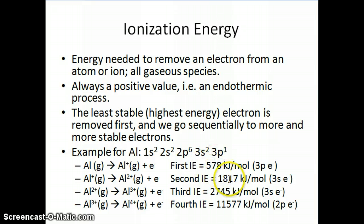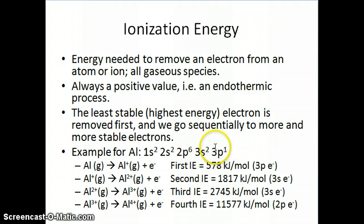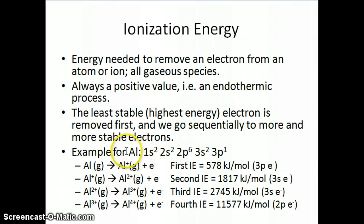We discussed that the different energies really correspond to the removal of these different electrons. As a result, there are energy value differences when we take out one electron versus another, because there are differences in terms of what kind of orbital the electron is located in, what kind of shell, and what atomic number the species has at that particular point.